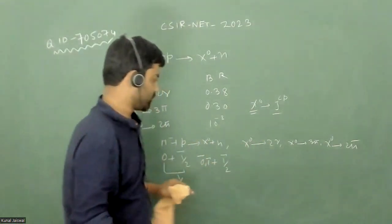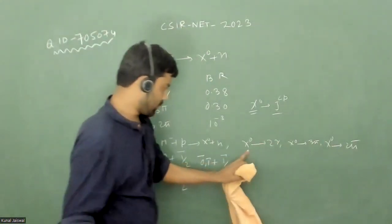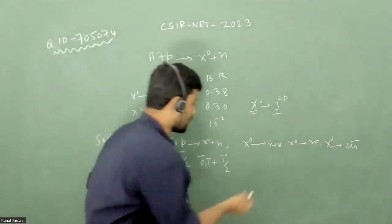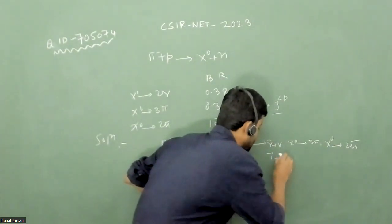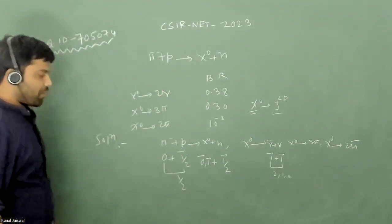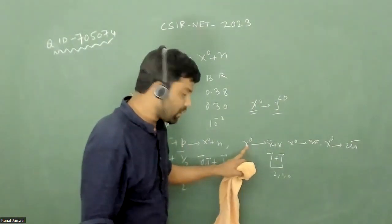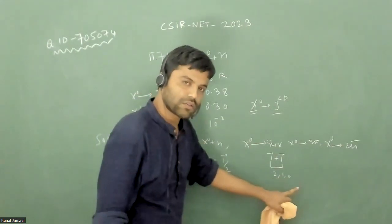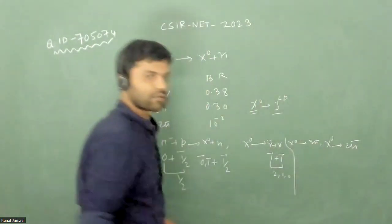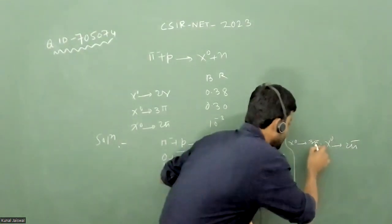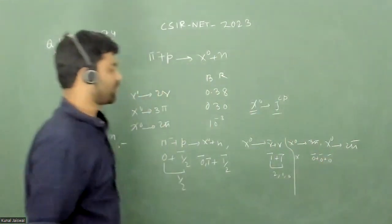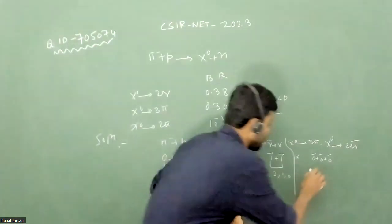Now from the decay x0 to 2 gamma: the spin of a photon is 1, so combining two photons gives spin 2, 1, or 0. So from this decay, the spin of x0 can be 2, 1, or 0. For the decay x0 to 3 pi: the spin of pi is 0, so 0 + 0 + 0 = 0. The spin of x0 from this decay must be 0.